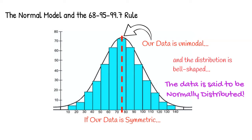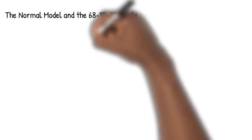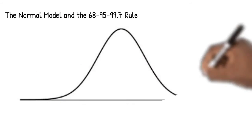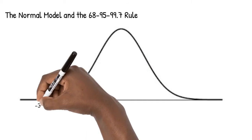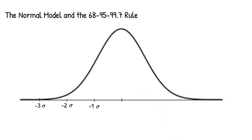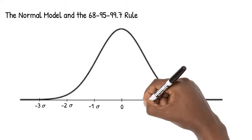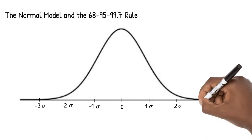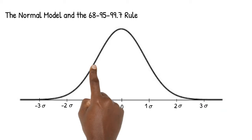For normally distributed data, we use a model called the normal model to determine the portion of values that lie within specific ranges. With normally distributed data, most of our values will lie between three standard deviations below the mean and three standard deviations above the mean.